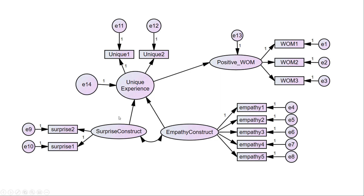With the two first-order constructs having a formative relationship to unique experience, unique experience has an error term because those paths are formative — Amos treats it quasi like a dependent variable. I've also included the MIMIC model with two items capturing unique experience overall; those have error terms. Notice that one of these paths is constrained to one — that's called setting the metric. It lets Amos know the range to assess. You can also see that one path on surprise and one on empathy are each constrained to one.